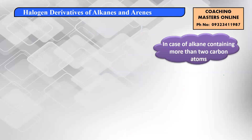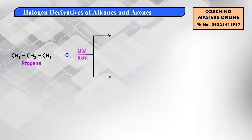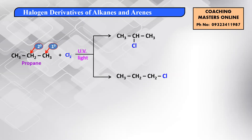Now let's understand what happens with more than two carbon atoms. Take propane and treat it with Cl2 in the presence of UV light, diffused sunlight, or heat. Two products are possible: if chlorine attacks the primary carbon (CH3), you get CH3CH2CH2Cl (1-chloropropane); if chlorine substitutes on the secondary carbon, you get CH3CHClCH3 (2-chloropropane).